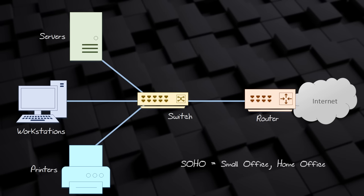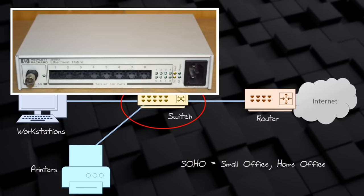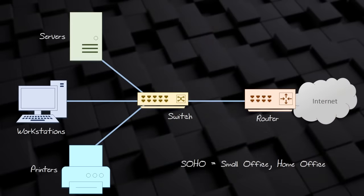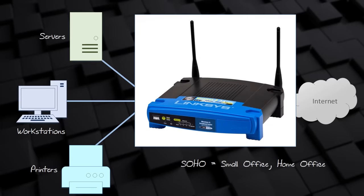SOHO networks typically have a couple of computers, a printer, a few phones and tablets. Some devices will be wireless and some are connected to a switch. People often say hub when they mean switch — but please keep in mind that switches and hubs are very different things. Hubs are really old technology that you generally don't see anymore outside of a museum, while switches are modern and commonly used. In a SOHO network, a router is used to connect to the internet. You might find that the router, switch, and access point are all integrated into one device.